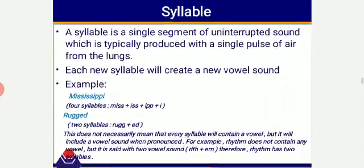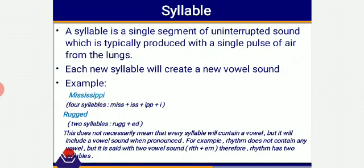Next is syllable. A syllable is a single segment of uninterrupted sound, typically produced with a single pulse of air from the lungs. Each new syllable will create a new vowel sound. For example, the word Mississippi has four syllables: Miss-is-sip-pi. The word beauty has two syllables. Similarly, the word rugged has two syllables. This does not necessarily mean that every syllable will contain a vowel — there are certain words that do not have a vowel at all, but they will certainly have a vowel sound when pronounced. For example, the word rhythm does not contain any vowel letter, but it is said with two vowel sounds: rhy-thm. So it has two syllables.